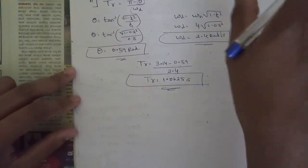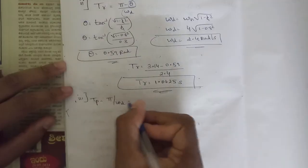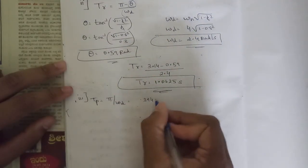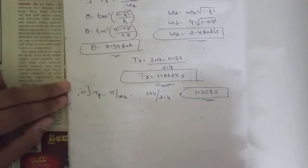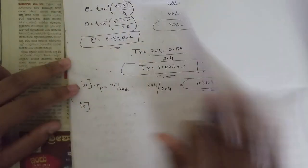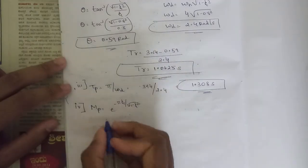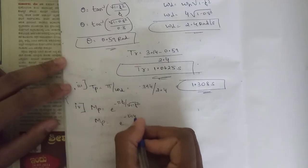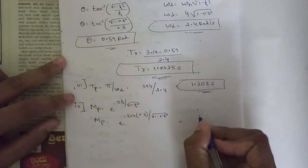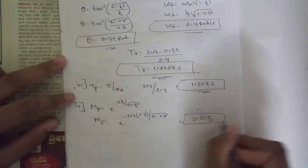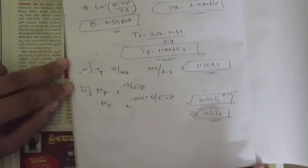Peak time tp = π / ωd = 3.14 / 2.4 = 1.308 seconds. Peak overshoot mp = e^(−πζ / √(1 − ζ²)) = e^(−3.14 × 0.8 / √(1 − 0.8²)). Solving gives mp = 0.015, or 1.5%.